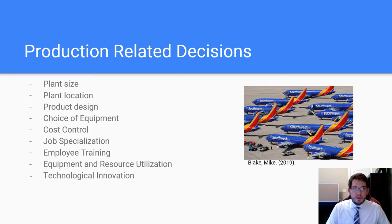The production-related decisions with this strategy are the small details that Southwest needs to cover to make it work. Southwest will not be growing their plant sizes or opening new airports; they will use existing airports to offer more flights. The location of these airports will stay the same; however, Southwest will be opening more gates at their current locations. Southwest's choice of equipment remains the Boeing 737, and employees will need to be trained on handling more frequent flights at current airports.